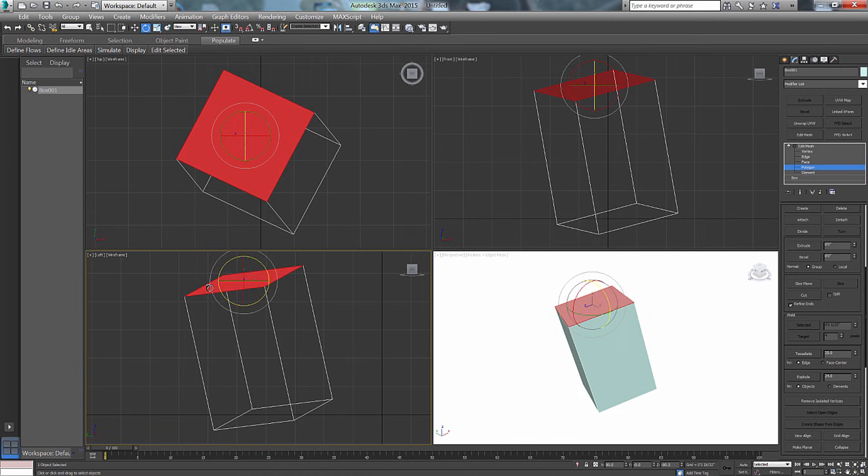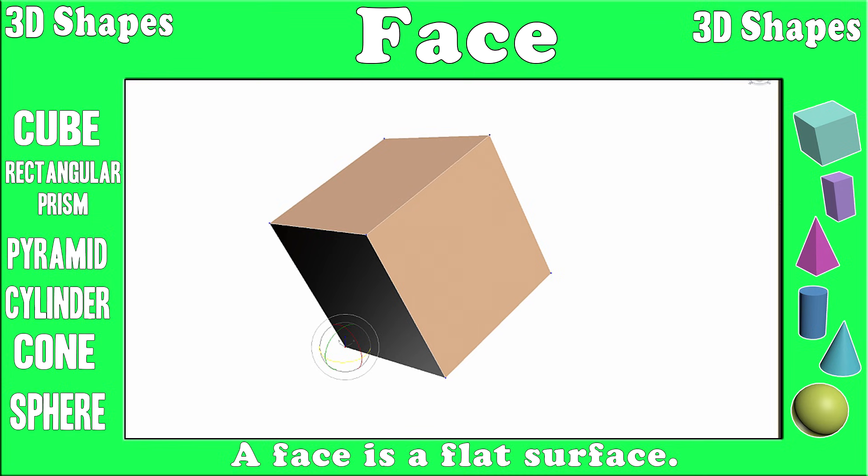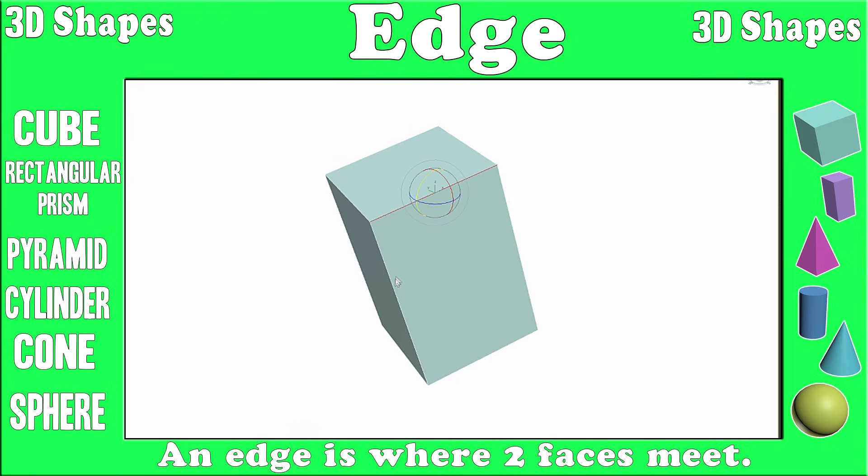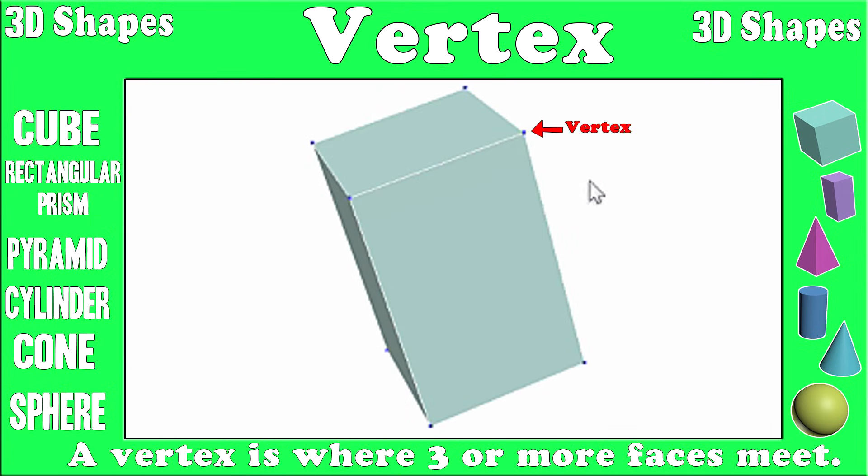I will also talk about faces, edges, and vertices. A face is a flat surface. An edge is where two faces meet. A vertex is where three or more faces meet.